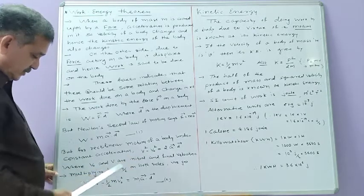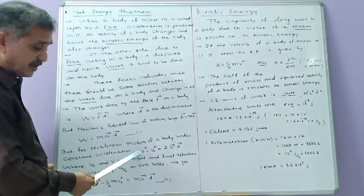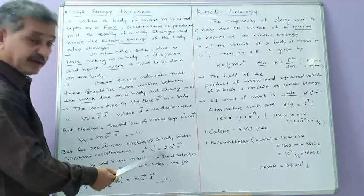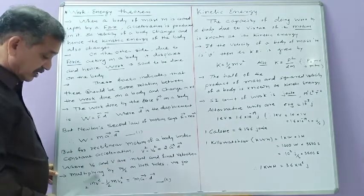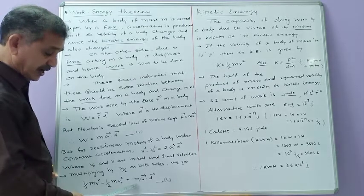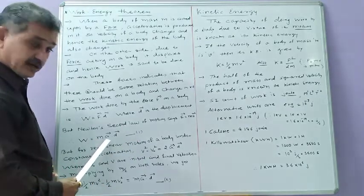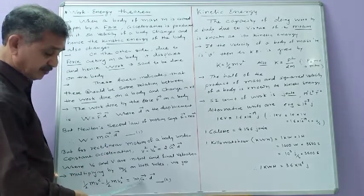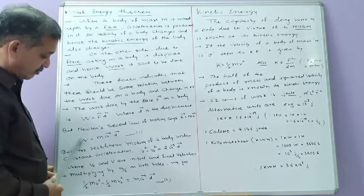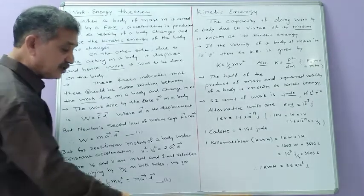Substituting this into equation 1, multiplying both sides by m/2: (1/2)mv² − (1/2)mv₀² = m·a⃗ · d⃗. This is equation 2. Comparing equation 1 and equation 2, the right-hand sides are equal, so the left-hand sides must also be equal. Therefore W = (1/2)mv² − (1/2)mv₀².